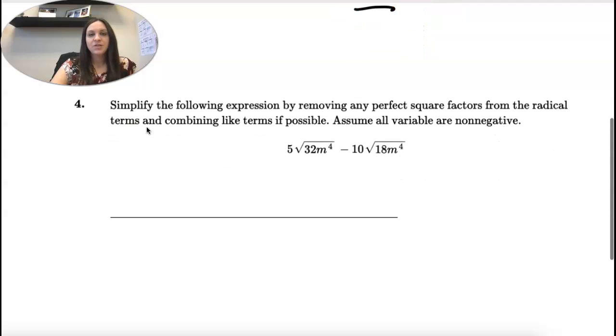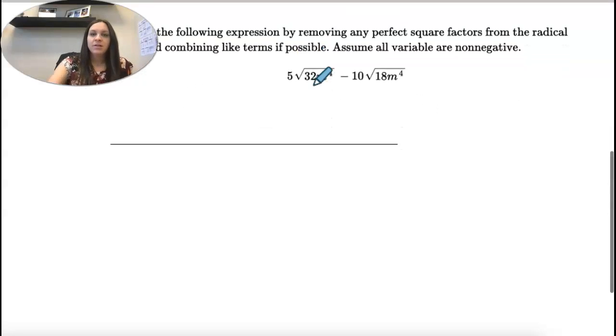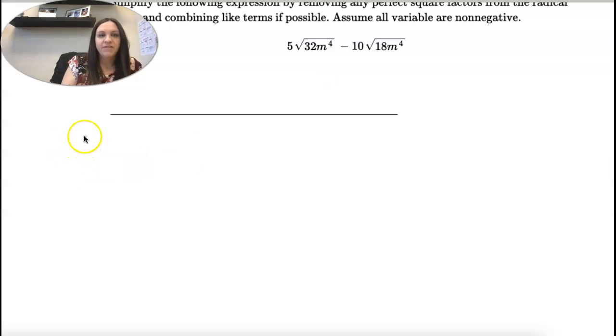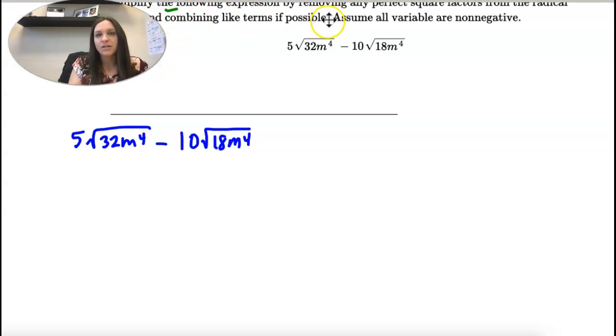Last one, we're going to simplify by removing perfect squares and then combining like terms. So, we have 5 square root of 32n to the 4th minus 10 square root of 18n to the 4th. And it tells us what to do first. We're going to simplify any perfect square factors.